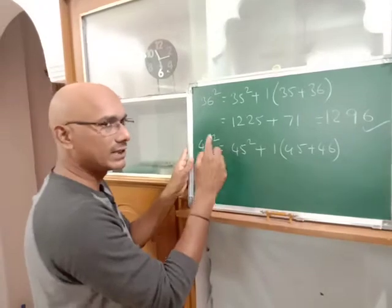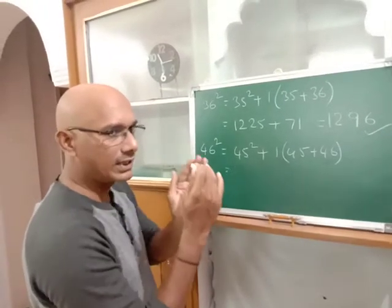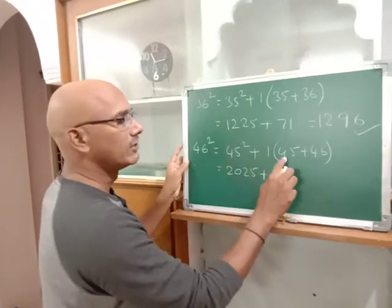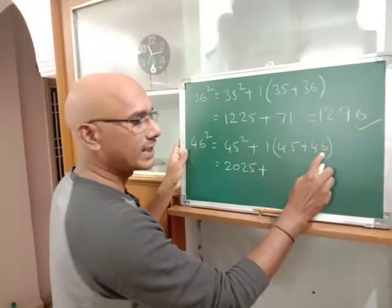45 squared: 4 tens, 5 ones. 4 times gives 20, so 20 followed by 25. That's 2025 plus 45 plus 46, which equals 91.